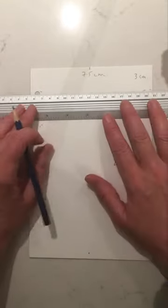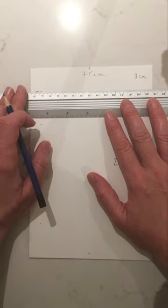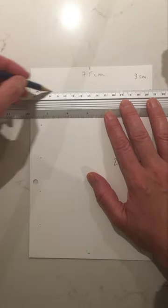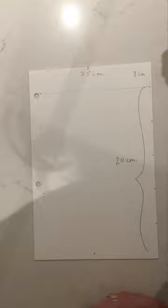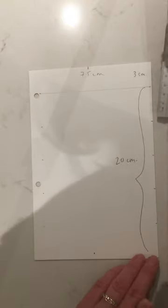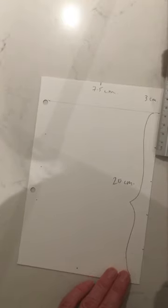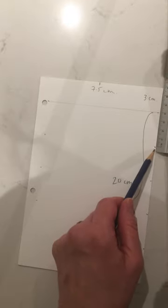So again, three centimeters, notching on both sides, creating a line across. And then each of these sections is four centimeters to give you five equal sections. Measuring from four centimeters down to zero, or you could turn your ruler the other way, whatever you're comfortable with.